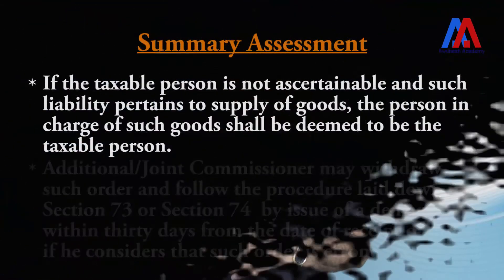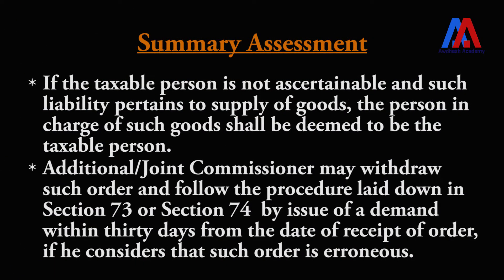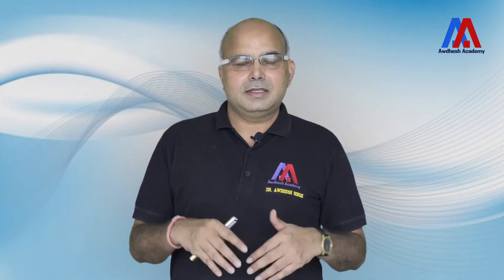In certain situations, the summary assessment order can also be withdrawn. The Additional Commissioner or Joint Commissioner may withdraw such an order and follow the procedure laid down under Section 73 or 74 by issuance of a demand within 30 days of receipt of the order, if it is considered that such an order is erroneous. If the Additional or Joint Commissioner finds that the summary assessment is not proper, he can withdraw the order and the proper procedures for recovery of duty under Sections 73 and 74 can be followed.